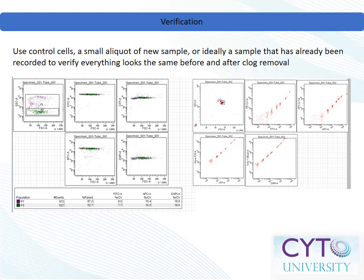As with any assay, reproducibility is key — this is true for procedures as unglamorous as clog removal. It is important to verify that the instrument has not changed in any way as a result of your intervention. Ideally, you can rerun a sample that was successfully run before the clog occurred, but in the absence of such a sample, control cells such as glutaraldehyde-fixed chicken red blood cells, leftover compensation control samples, or even quality control beads can be used to verify the instrument's performance.